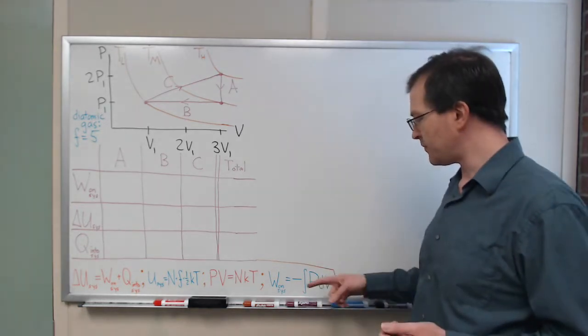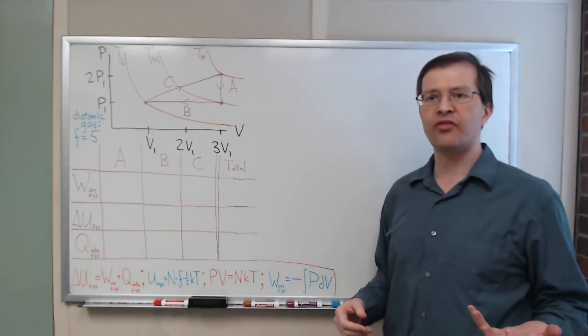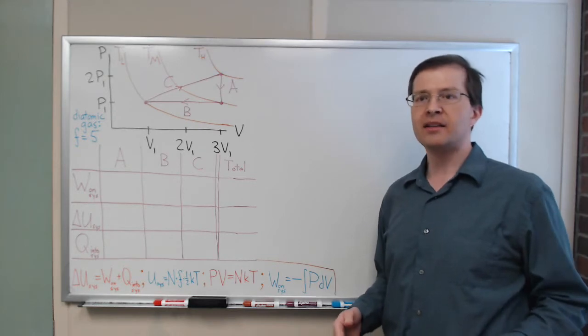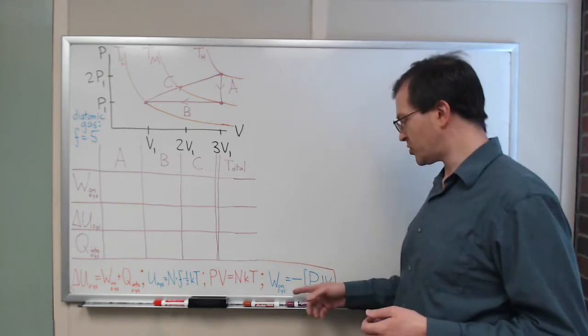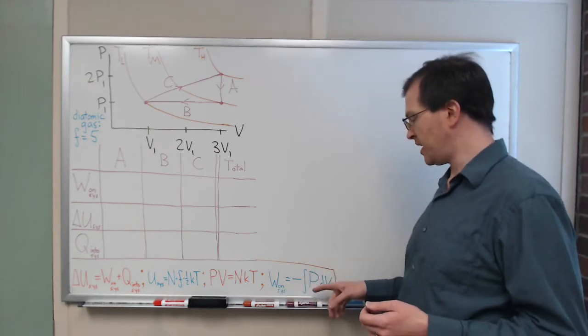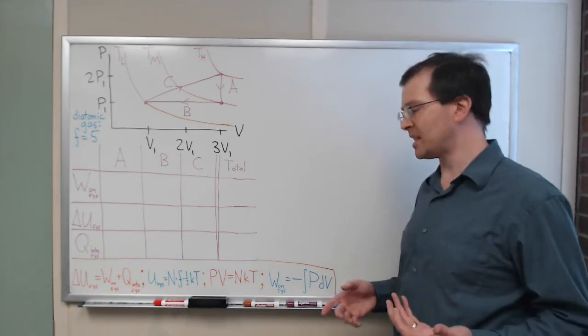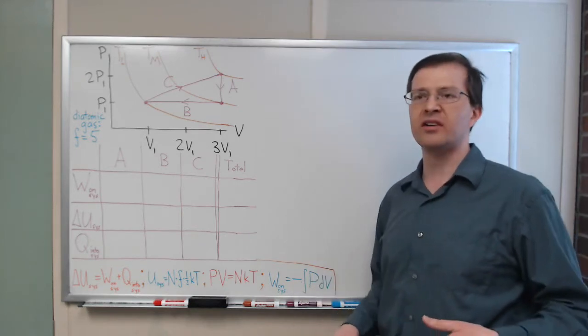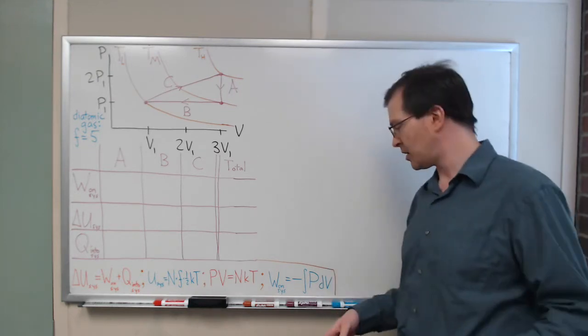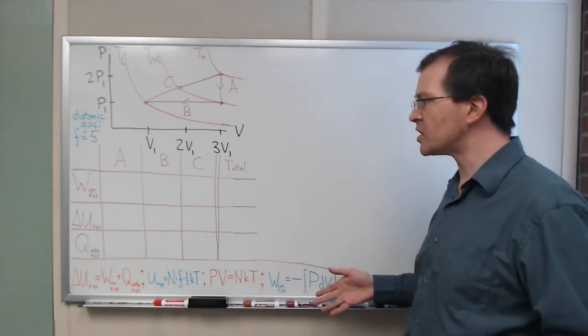And the final tool we're going to use, the final ingredient we're going to use, is work, which is usually defined as force times distance. But you can show in a relatively straightforward way that that's also equivalent to pressure times volume. And the work on the system is the pressure of the system time integrated over the change in volume. That's the idea. The negative sign there is what gives us the work on the system. If we want to know the work by the system on the environment, we can put a positive sign there. So, those are the ingredients we're going to use.